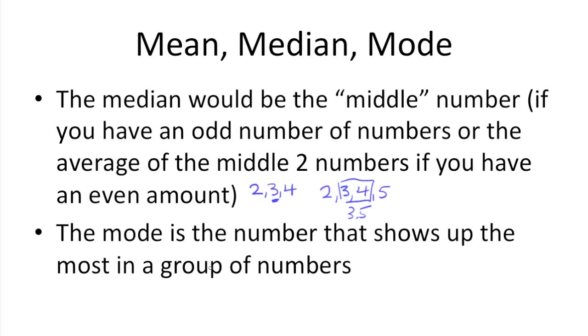Moving on, the mode is just the number that shows up the most in a group of numbers. So if we had 1, 1, 3, 5, 7, the mode would be 1 because it shows up twice, which is more than all the other numbers in the group.